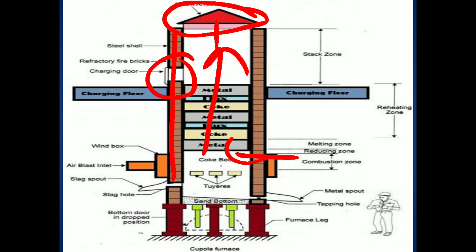Being heavier, the cast iron falls to the base of the furnace onto the sand bottom and wood bed. Slag always floats above the cast iron. By using the two notches, the slag is taken out and the cast iron in liquid state is also tapped out.